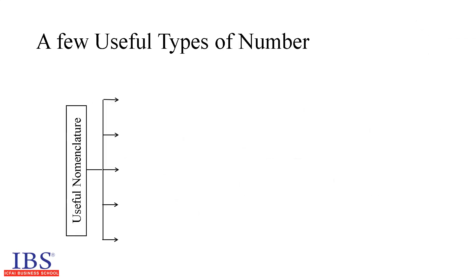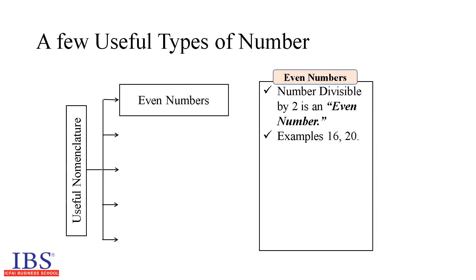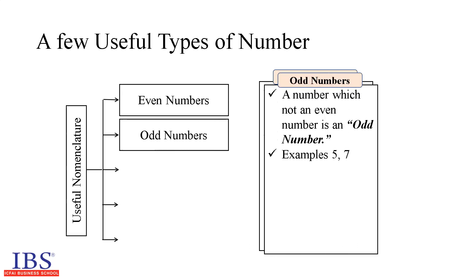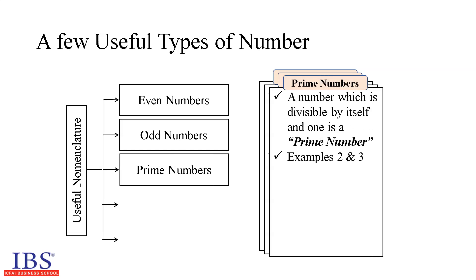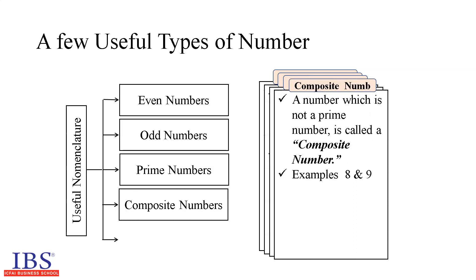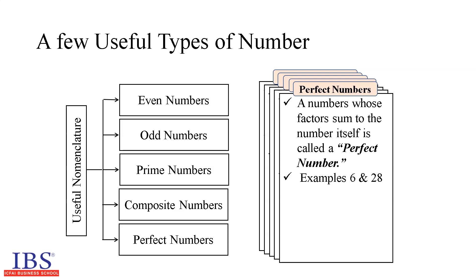Let us have a look at a few types of numbers we generally come across. Even numbers are numbers divisible by 2, for example 16 and 20. Odd numbers are numbers which are not even, for example 5 and 7. A prime number is a number which is divisible by itself and 1, for instance 2 and 3 — 2 is the only even prime number. A composite number is a number which is not a prime number, for example 8 and 9. A perfect number is a number whose factors sum to the number itself, for example 6 and 28.